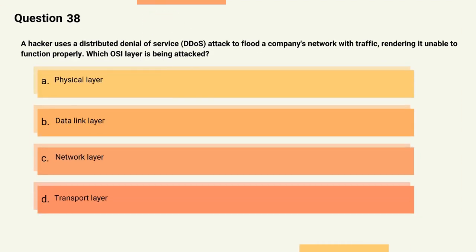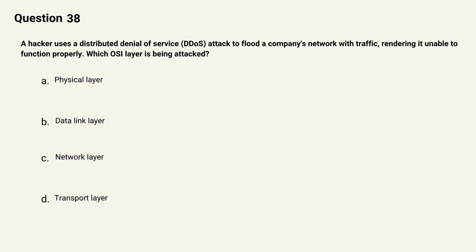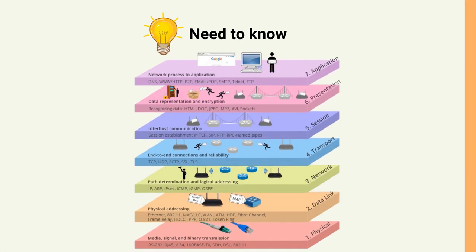Question 38: A hacker uses a distributed denial of service (DDoS) attack to flood a company's network with traffic, rendering it unable to function properly. Which OSI layer is being attacked? Options: A) Physical layer, B) Data link layer, C) Network layer, D) Transport layer. The correct answer is Option C, Network layer. Explanation: The network layer is responsible for routing network traffic and providing logical addressing. Flooding the network with traffic is an attack on the network layer.